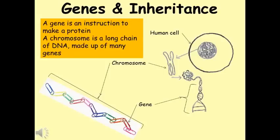Each chromosome is made up of a chain of genes, with one gene being an instruction to make a particular type of protein. We could model this using a chain of paper clips. In this case, the chain is like a chromosome, with each paper clip representing a single gene. The paper clips are made up of metal, which represents the DNA.